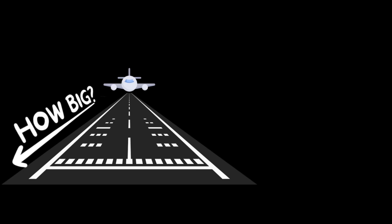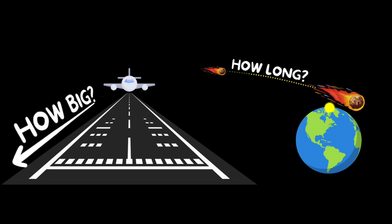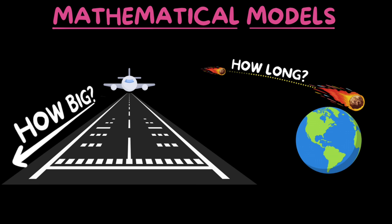How do we figure out how big a runway we need so that a landing plane can stop safely? Or imagine there's an asteroid hurling towards the earth — it's not going to hit the earth, it's going to come very close by. How do we figure out how long it would take to come close to the earth so we can be prepared to see it? Well, this requires us to predict the future, and one of the ways to do that is by building what we call mathematical models.